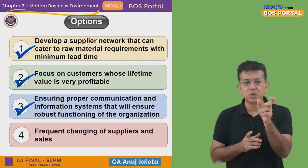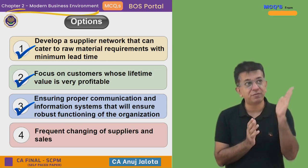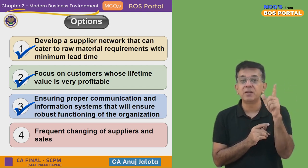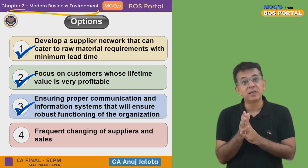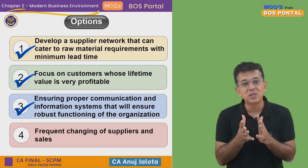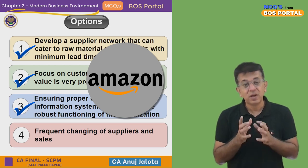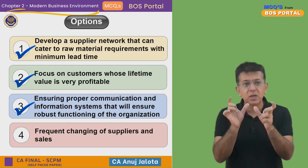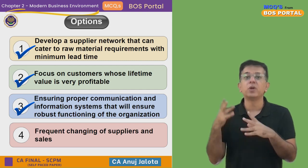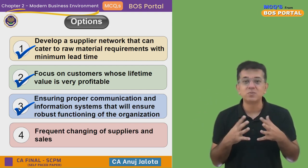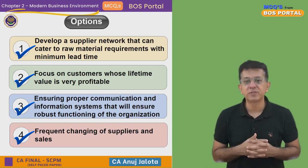Option C — ensuring proper communication and information systems for robust functioning of the organization. Good communication is the heart of any organization today. If you do not have proper information systems, you may not be able to function — when is material coming, when did it leave the supplier, when will it reach us, how long will production take, when will distribution be complete, when will goods reach the final customer? Think of it like buying something on Amazon and not knowing when it will be delivered — that would not work. Good information systems lead to good supply chains.